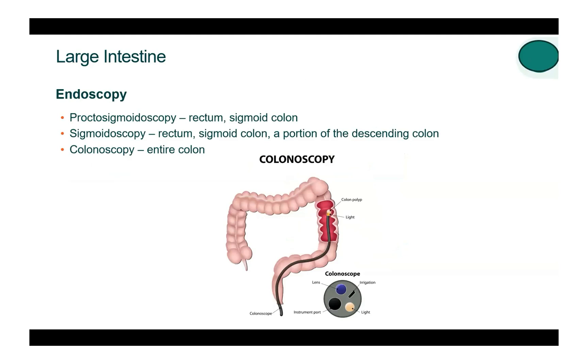When coding for endoscopies of the large intestine, it's important to know the extent of the large intestine examined. The endoscopy begins at the rectum. For a proctosigmoidoscopy, the examination goes into the sigmoid colon. For a sigmoidoscopy, the examination goes through the sigmoid colon and possibly into the portion of the descending colon. For a full colonoscopy, the entire colon is examined.